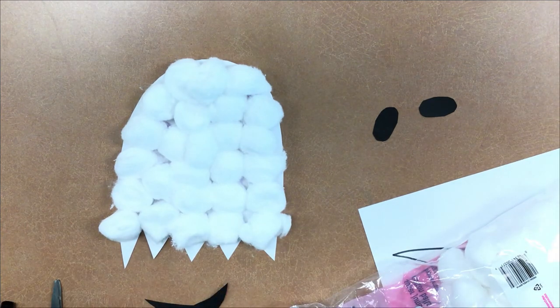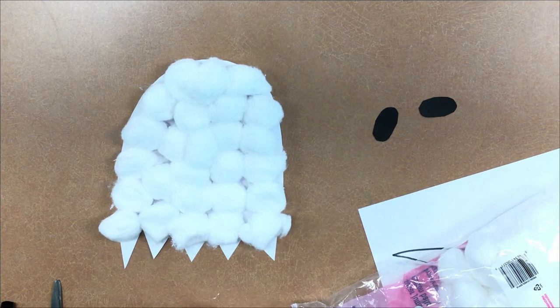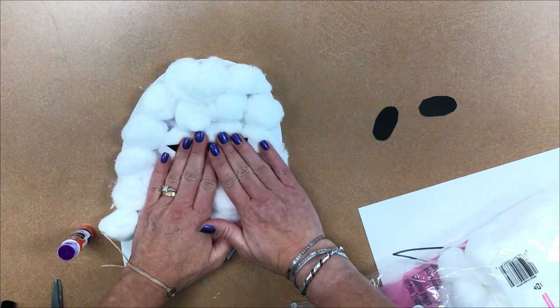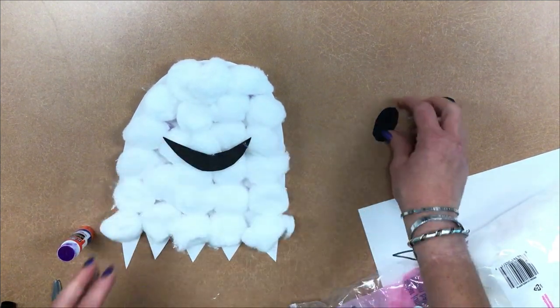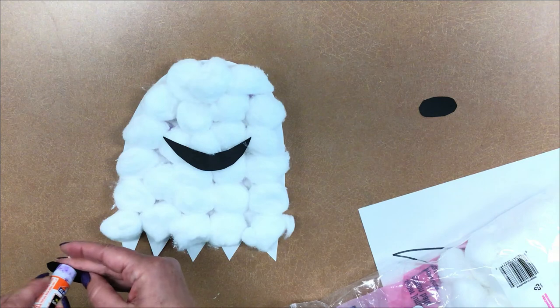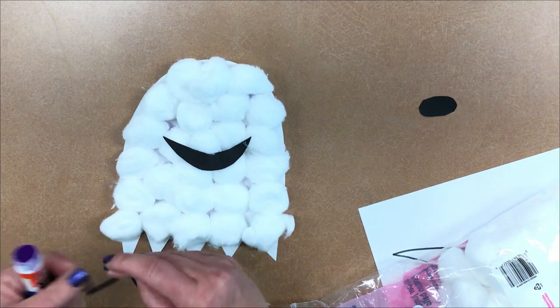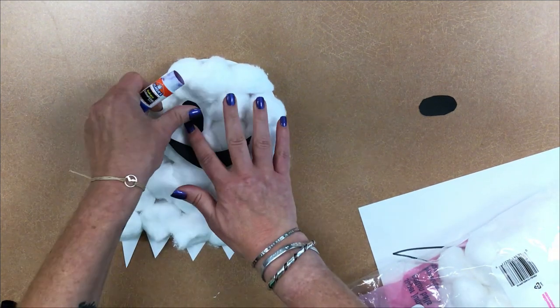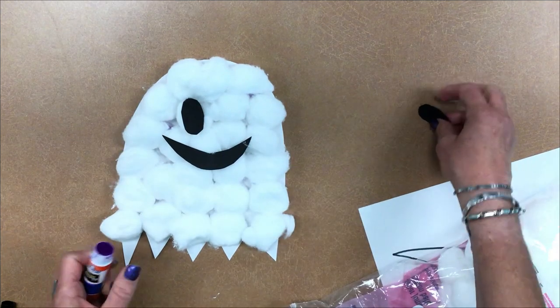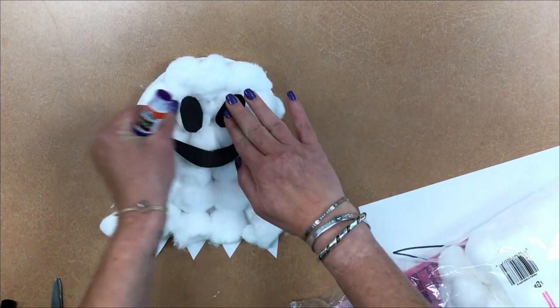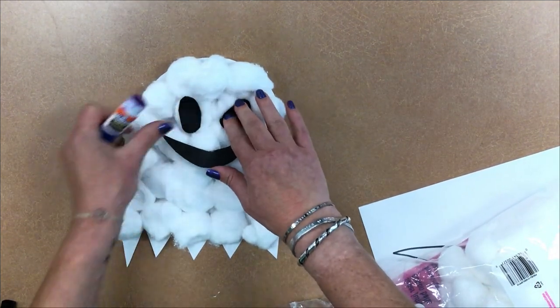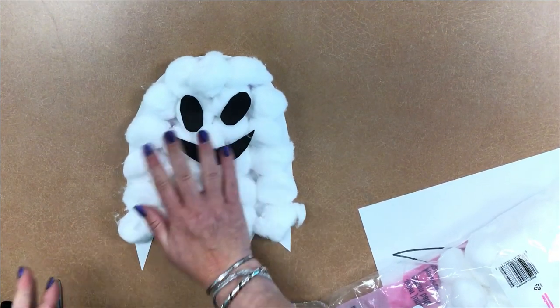Next thing you do, just put a little glue right on your smile. And you squish it on. Do the same thing for your eyeballs. Again, if you have googly eyes and you want to use those, great. If you want to make blue eyes, great. And there you go. Puffy ghost.